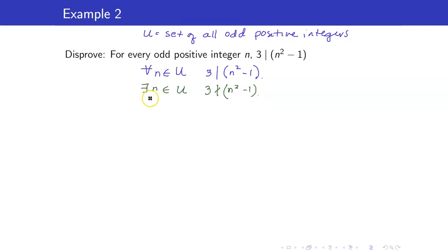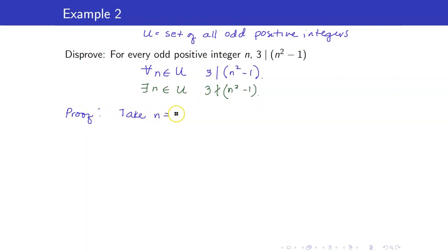Whenever we are trying to construct an object for our existential statement, we usually want it to be as simple as possible, so we usually try the smaller numbers. We can take n to be equal to 3. It satisfies the given requirement. Note that 3 does not divide 3 squared minus 1.